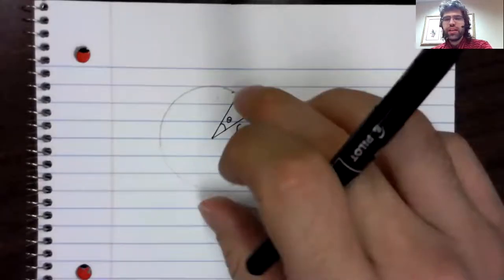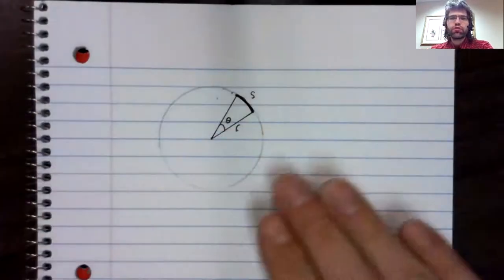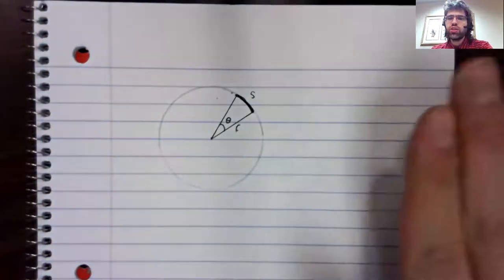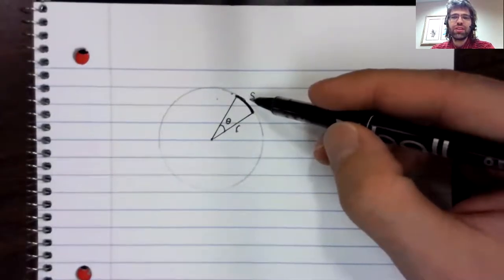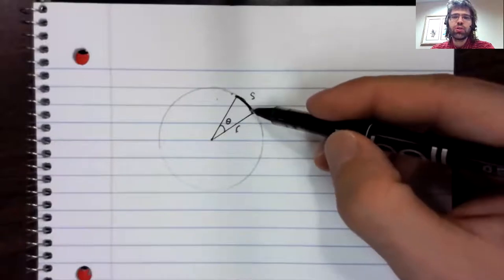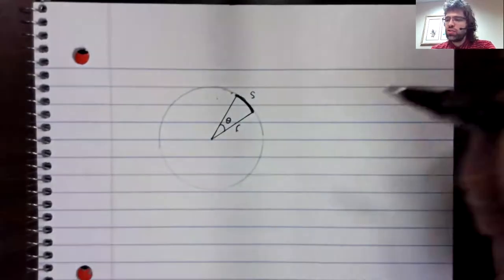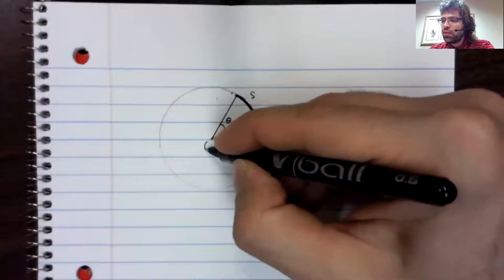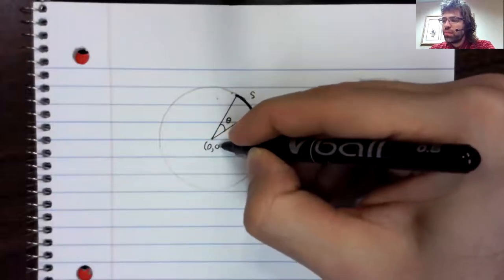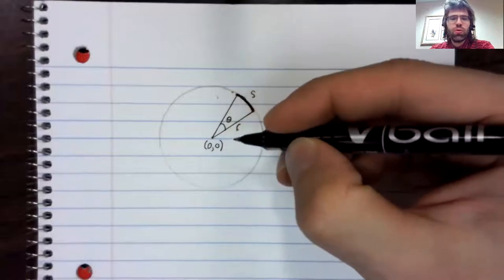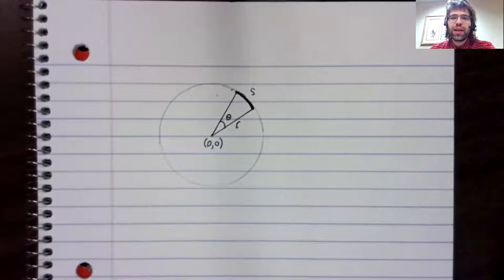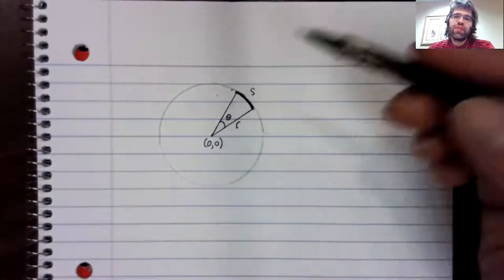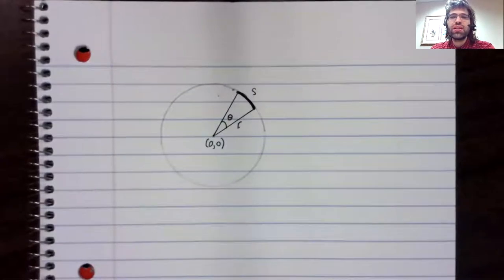Now, taking this circle and moving it around the Cartesian plane isn't going to change this angle or the radius or the length of this arc. So we might as well assume that the center of this circle is the origin. If the circle is anywhere else, we'll just take it and move it so that it's centered here.